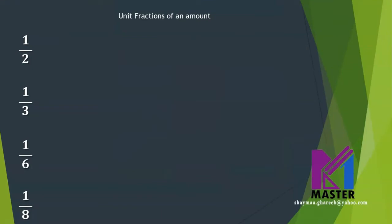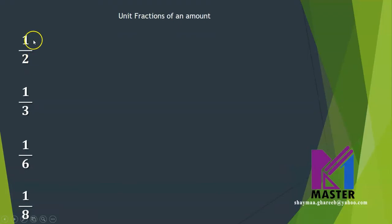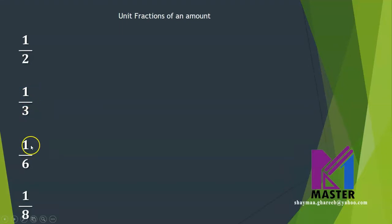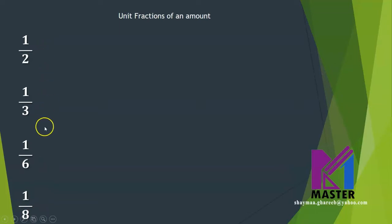Unit fractions of an amount. What's the meaning of the word unit fraction? A unit fraction means one part. So one over two means only one half. One over three means one third — only one part out of three parts. One part out of six parts is one sixth, or one over six. One eighth. So this is the meaning of unit fraction, which is one part.